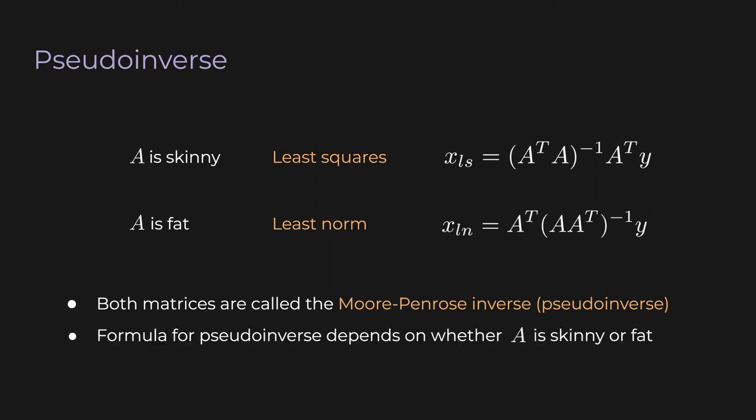If A is a square invertible matrix, we just take its inverse to solve y equals Ax. If A is skinny, we use least squares. If A is fat, we use least norm. The closed-form for least squares and the one we just derived for least norm are close cousins — both are the Moore-Penrose pseudo-inverse, with different formulas depending on whether A is skinny or fat. In either case, A must be full rank. But this isn't restrictive — if A has redundant columns or rows, you can keep removing them until nothing's redundant, even using software like NumPy.